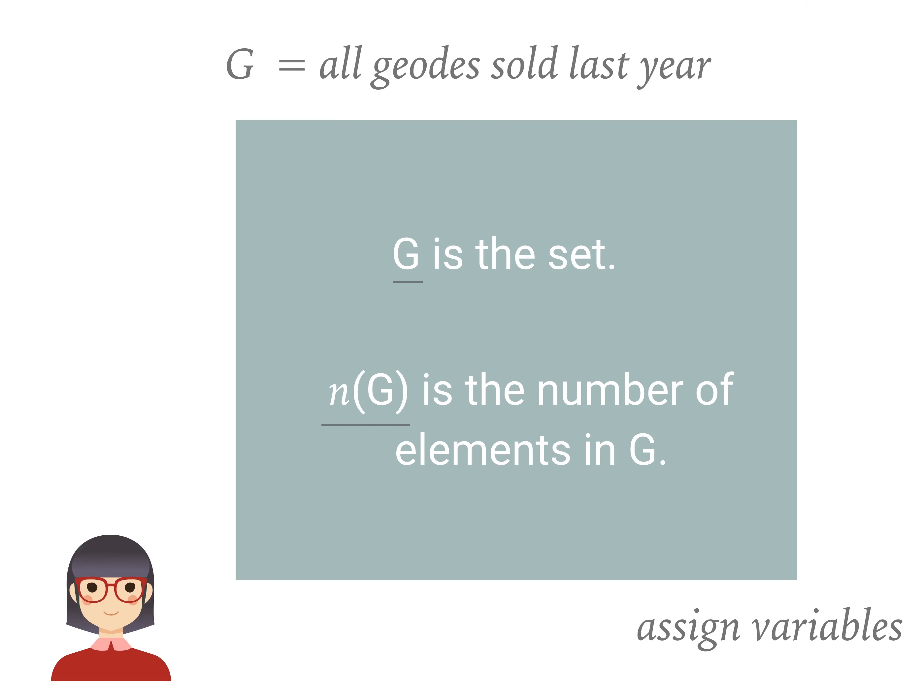It's always n, which stands for number. Parentheses can be said as of, and G is the variable that we assigned to the set.